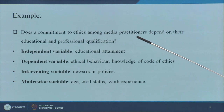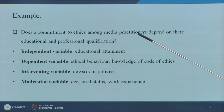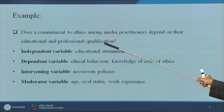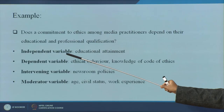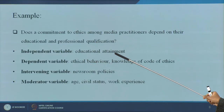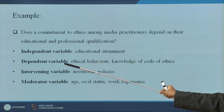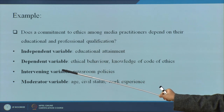For example: does a commitment to ethics among media practitioners depend on their educational and professional qualification? The independent variable here is educational attainment — how much education the person has. The dependent variable is how ethical he, she, or the organization is.